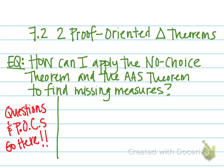Section 7.2 is about two proof-oriented triangle theorems. We've actually talked about these in class before last semester, so it's not going to seem too new for you. Your central question is: how can I apply the no-choice theorem and the AAS theorem to find missing measures?